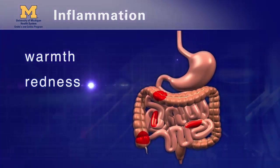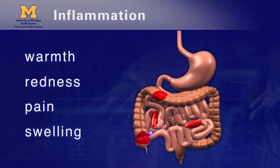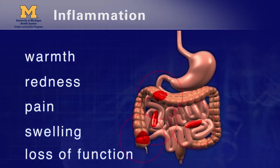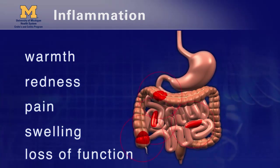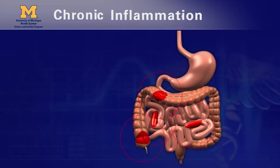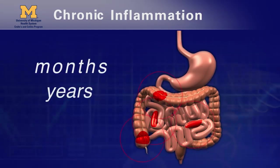The five signs are: warmth, redness, pain, swelling, and loss of function. In IBD, these symptoms happen in the gastrointestinal tract and cause symptoms in your belly. IBD is referred to as a chronic inflammatory disease because the immune system is abnormally activated and stays activated for months or years.